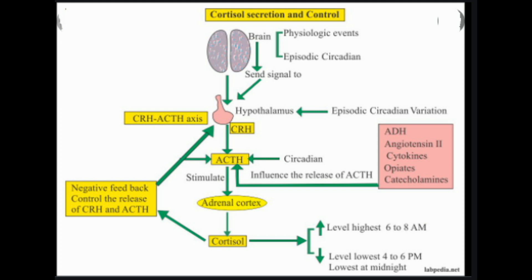The late night salivary cortisol test is a relatively new test that checks for elevated levels of cortisol in the saliva between 11 PM and midnight. Cortisol secretion is usually very low late at night, but in patients with Cushing's syndrome the level will always be elevated. Normal levels of late night salivary cortisol virtually exclude the diagnosis of Cushing's syndrome. When administered correctly, this test should provide an estimated 93 to 100 percent diagnostic accuracy rate.